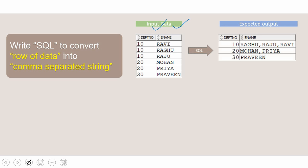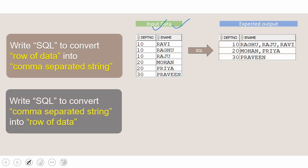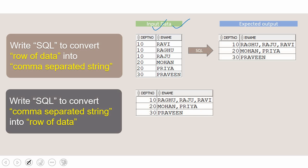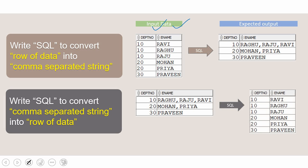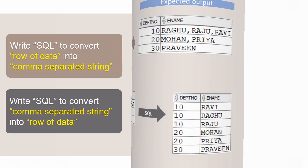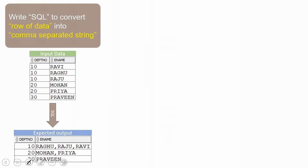This is our first scenario. In the second scenario, we are going to see exactly the reverse of this case. Our input is a comma-separated string, and we are going to write a SQL to convert this comma-separated string into a row of data. Let us start with our first scenario, where we write a SQL to convert a row of data into a comma-separated string.